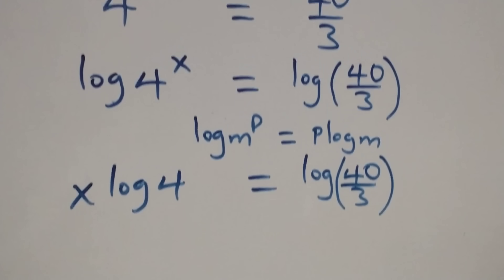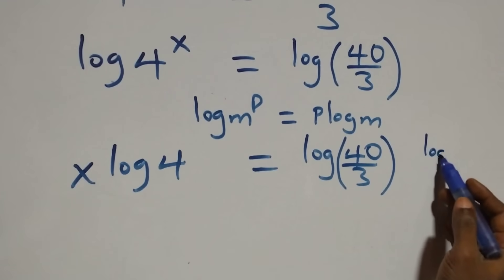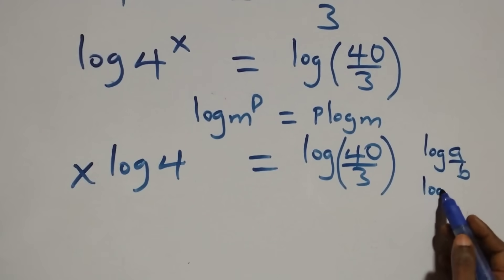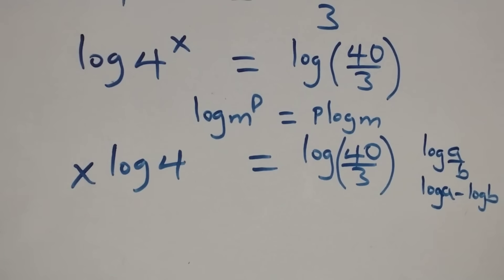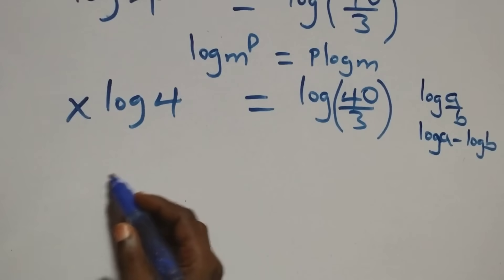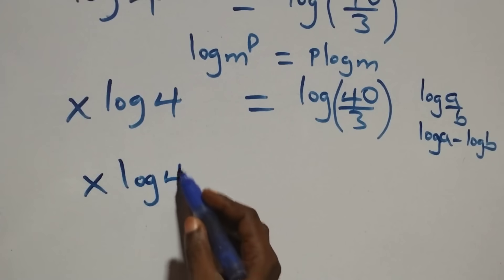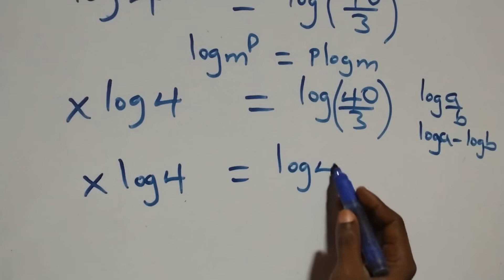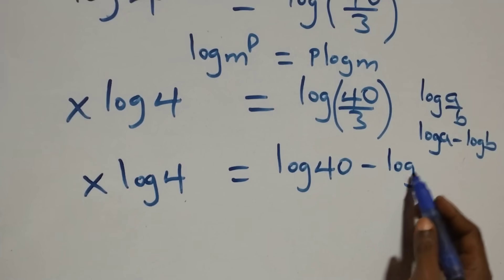The next step here: when we have log a over b, it is the same thing as log a minus log b. That is, here we have x log 4 equals to log 40 minus log 3.